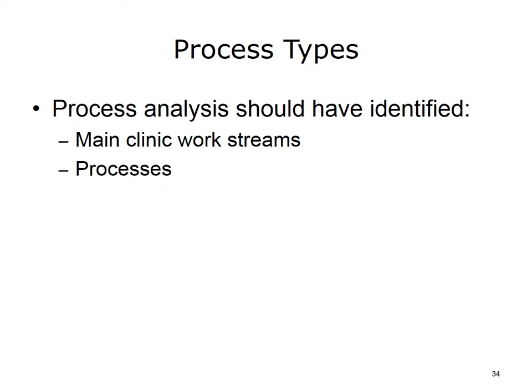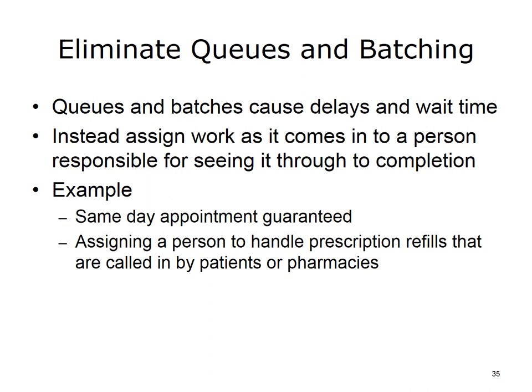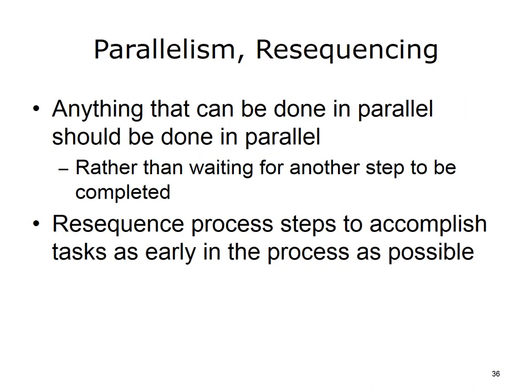Identifying process types is more a principle than a strategy, but the process analysis should have identified the main types of clinic work streams and processes. Queues and batches cause delays and wait time. To avoid long queues and large batches of work, it is best to assign work as it comes in and to a person responsible for seeing the work through to completion. For example, guaranteed same-day appointments avoid patient backups, and assigning one person to handle all prescription refills regardless of whether the prescription is called in by patients or pharmacies. Anything that can be done in parallel, rather than waiting for another step to be completed, should be done in parallel. Re-sequence process steps to accomplish tasks as early in the process as possible.